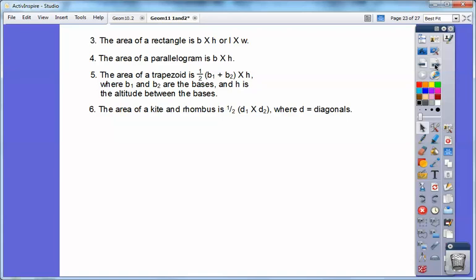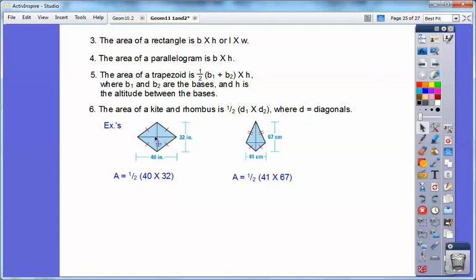The area of a kite and a rhombus is half the product of the diagonals, diagonal 1 times diagonal 2. Here we go. I got this rhombus because all four sides are equal. Here's one diagonal, here's another diagonal. So I'm going to go 1 half 40 times 32. On this kite, this is a kite because two sides are equal, and these two sides are equal. Here's the diagonal here, 41, and here's the diagonal here, 67. So this one's going to be 1 half 41 times 67. Don't forget to end your units in square units. 1 half 40 times 32, and 1 half 41 times 67. This one I get 640 inches squared, and this one I get 1,373.5 centimeters squared.